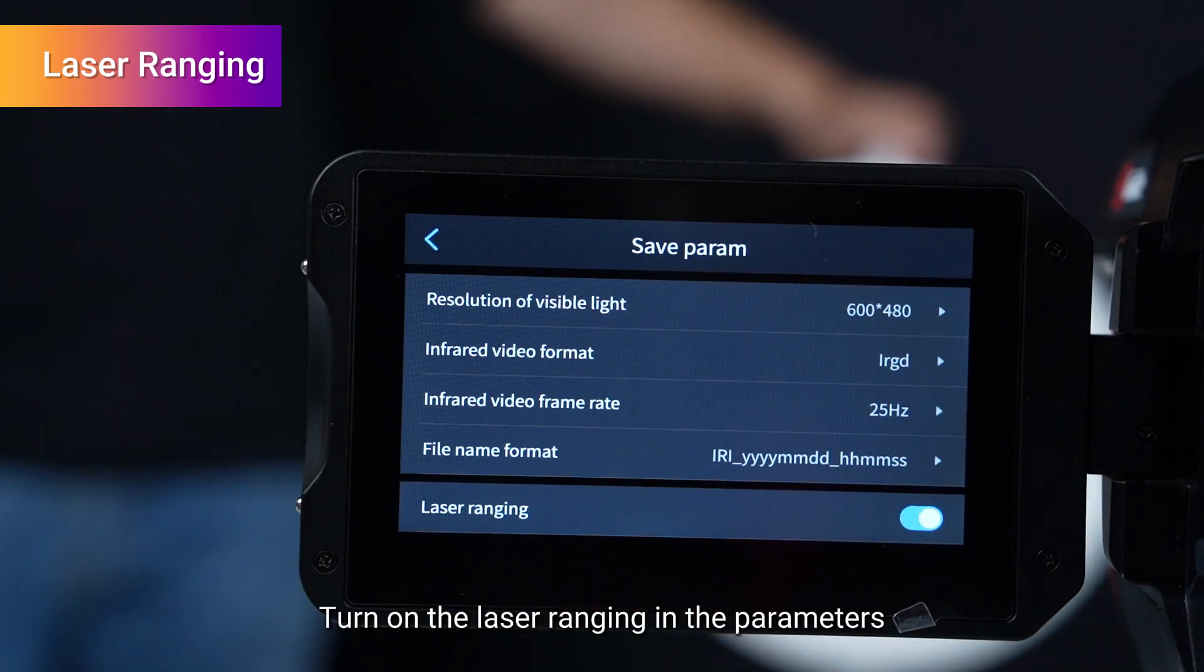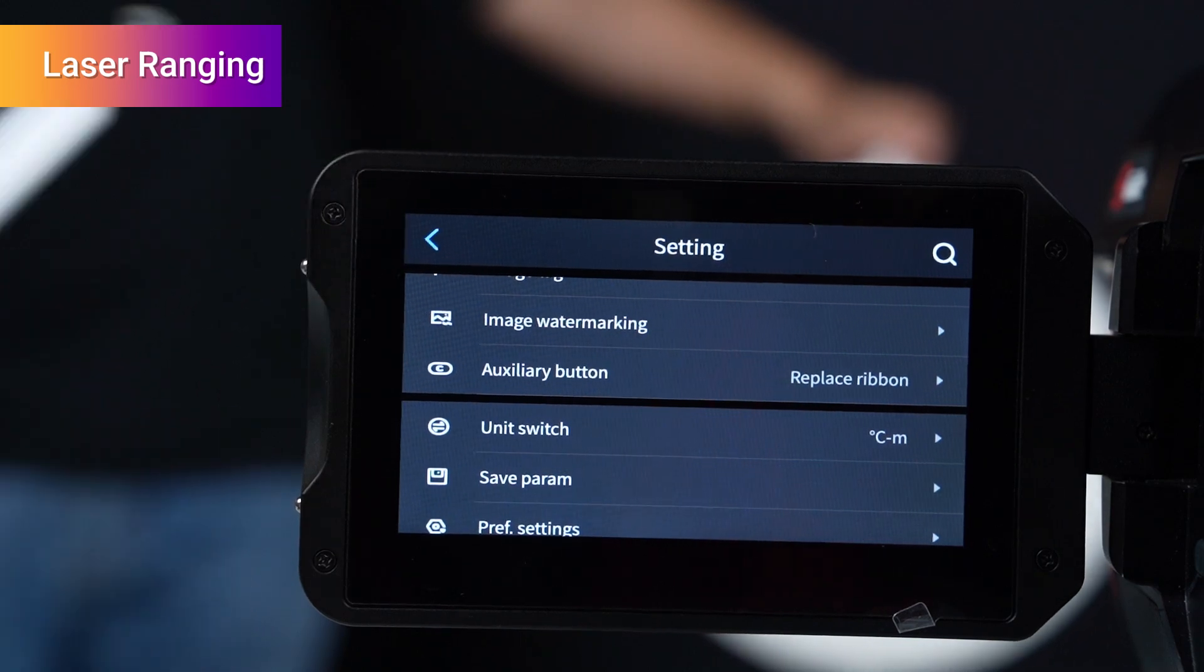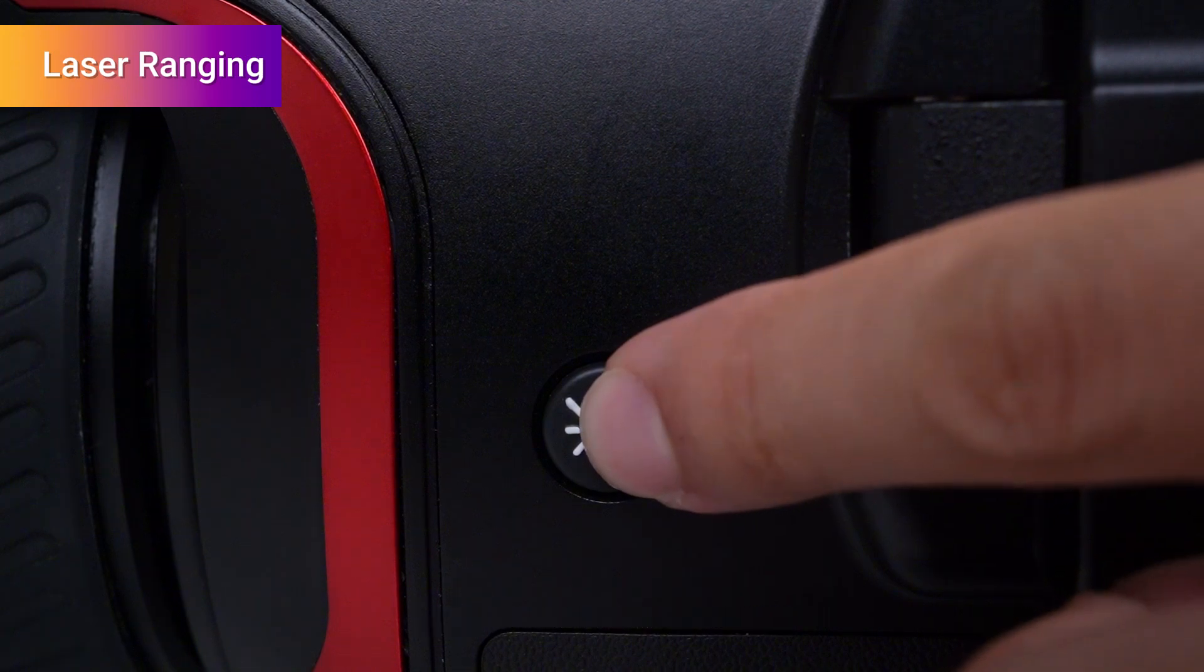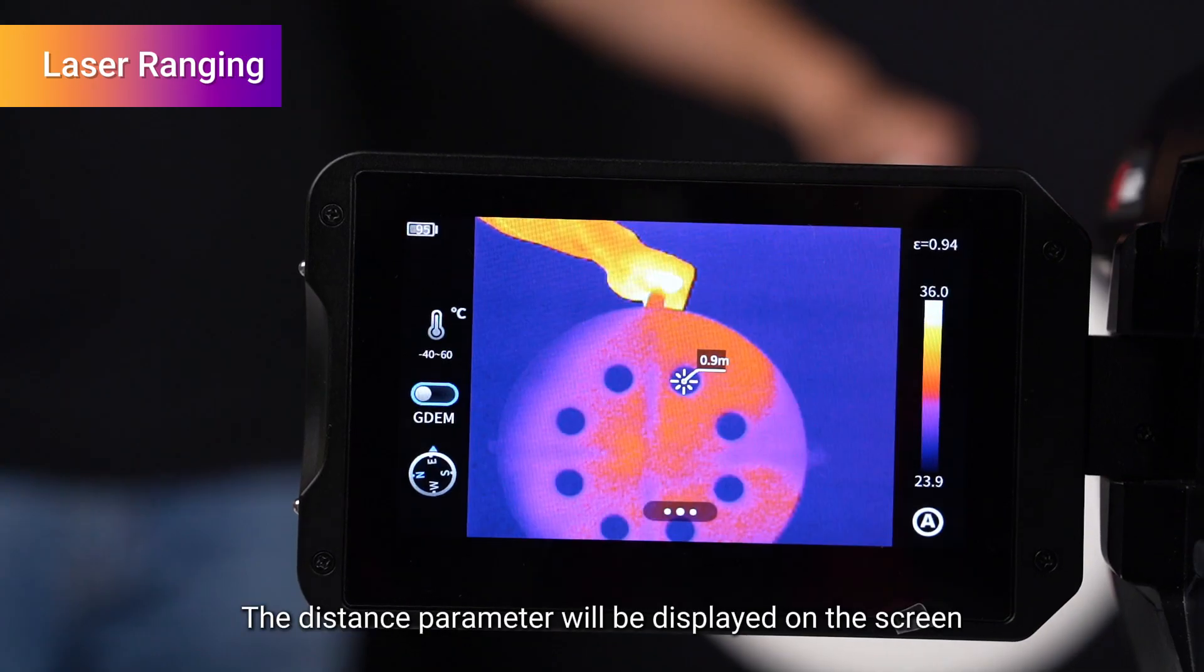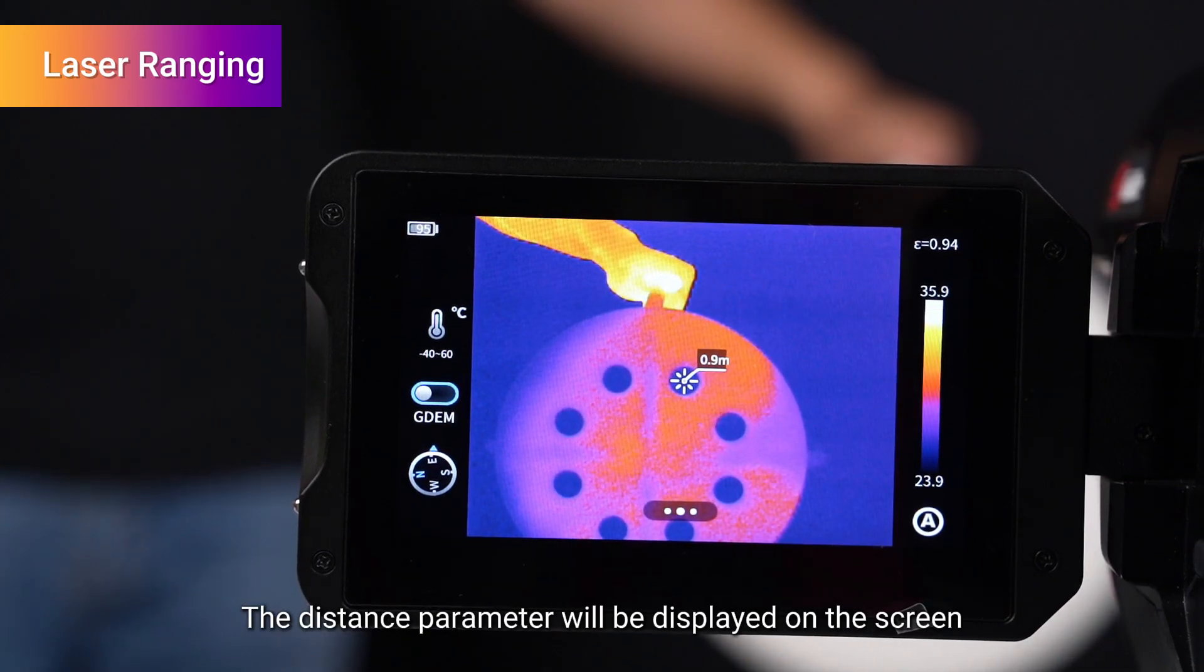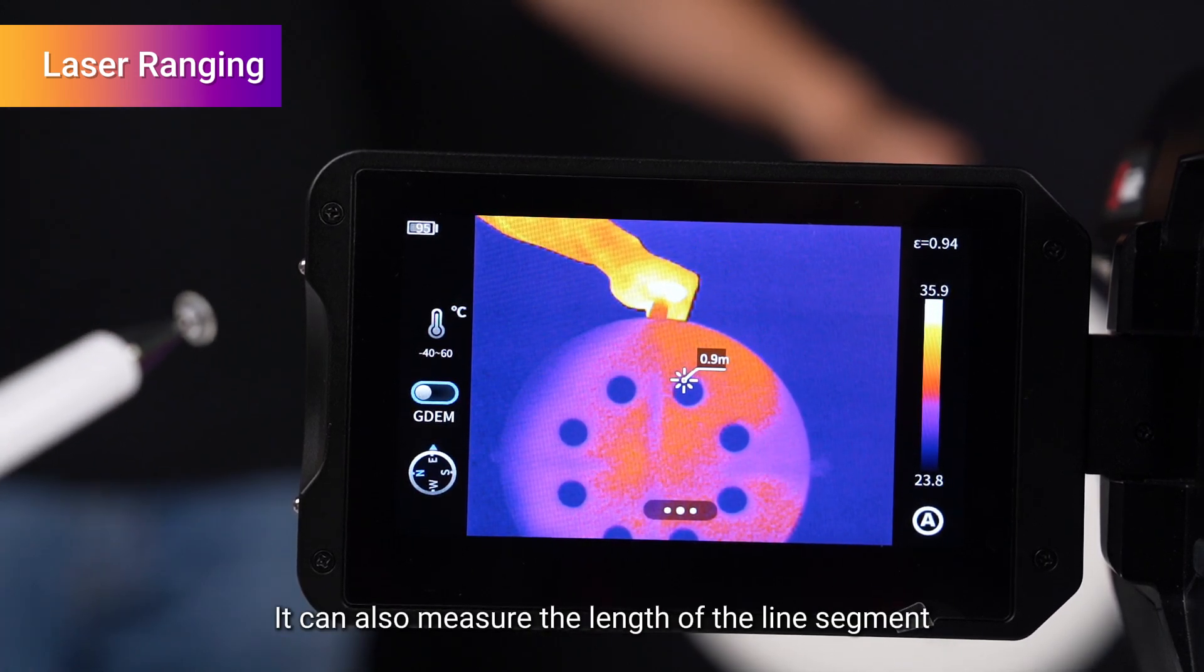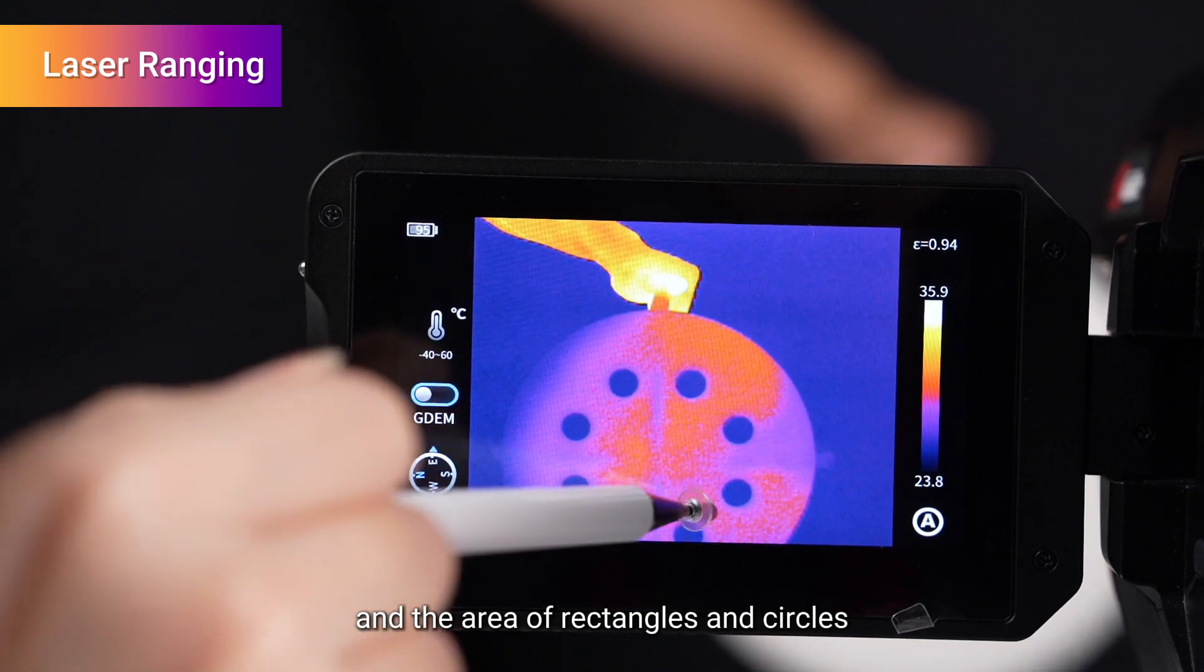In the parameters, press the laser button. The distance parameter will be displayed on the screen. In addition to laser ranging, it can also measure the length of line segments and the area of rectangles and circles.